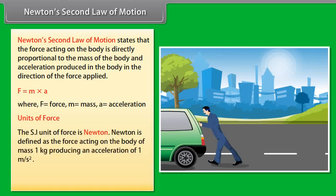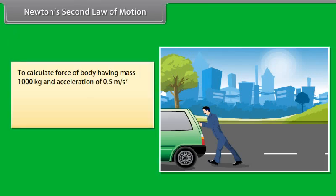The SI unit of force is Newton. Newton is defined as the force acting on the body of mass 1 kg producing an acceleration of 1 meter per second square. Unit is kilogram meter per second square or Newton. To calculate force of body having mass 1000 kg and acceleration of 0.5 meter per second square, then F equals 1000 into 0.5 which equals 500 Newton.